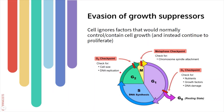In G1 and G2 there are checkpoints where the cell pauses and takes stock of how things are going. Before the S phase where DNA is replicated, there's a checkpoint where the cell checks if its DNA is damaged — there's no point in replicating DNA if it has mutations. The cell will check for damage and stop the cell cycle if it detects damage. Then in G2, before mitosis, it checks again whether DNA was replicated properly. If either checkpoint is not passed, mitosis won't happen.